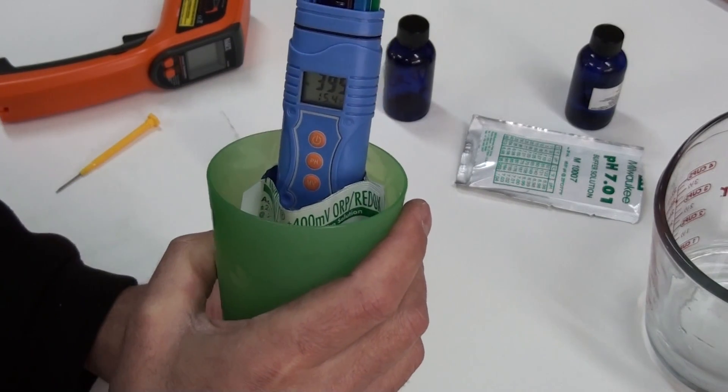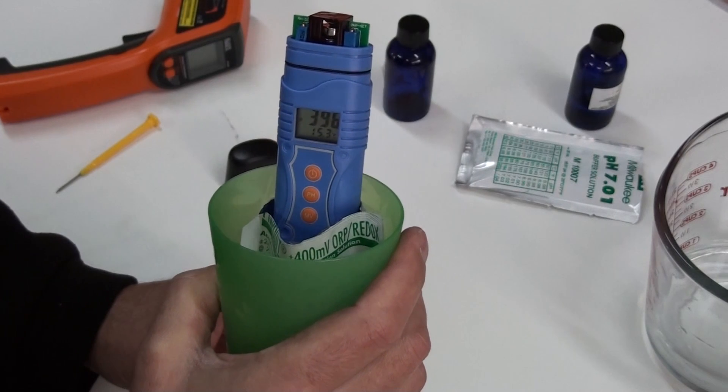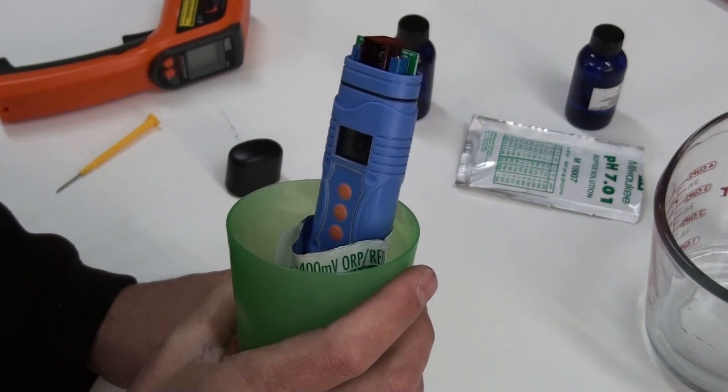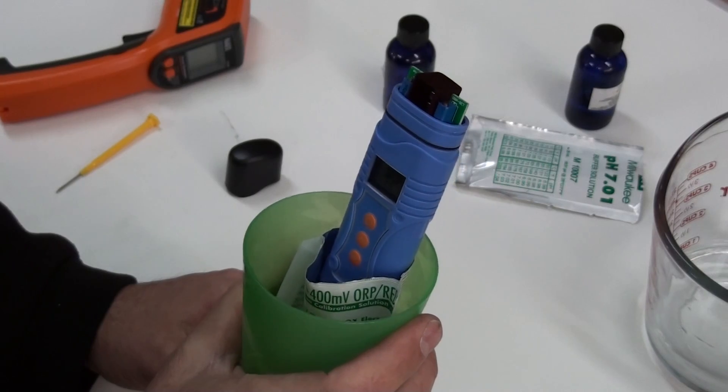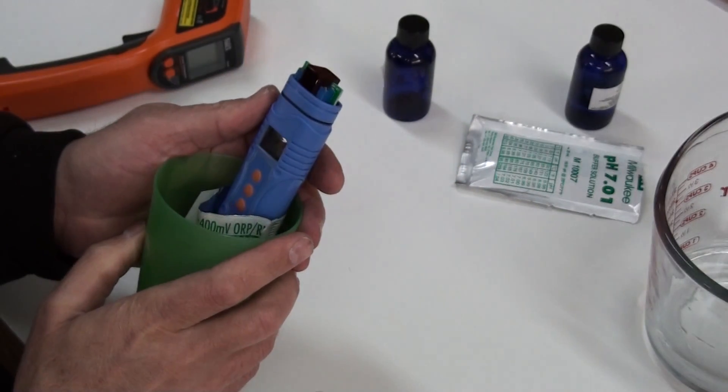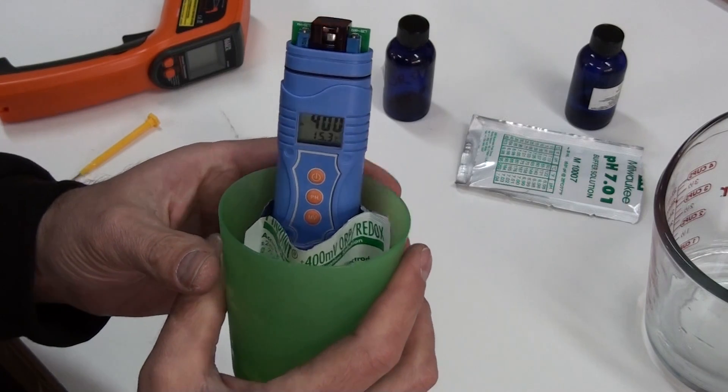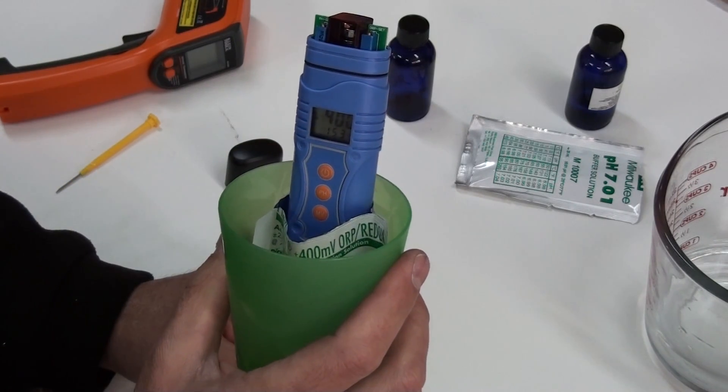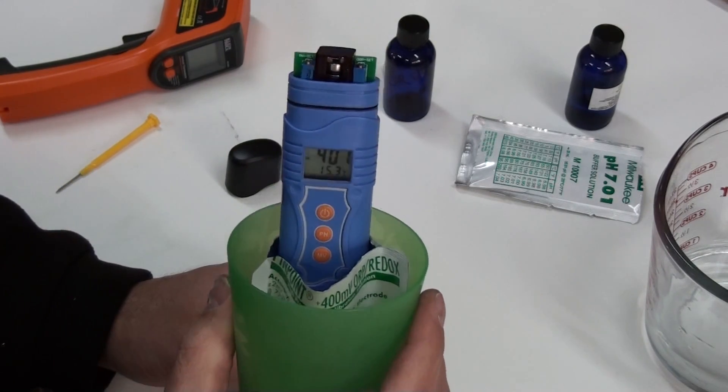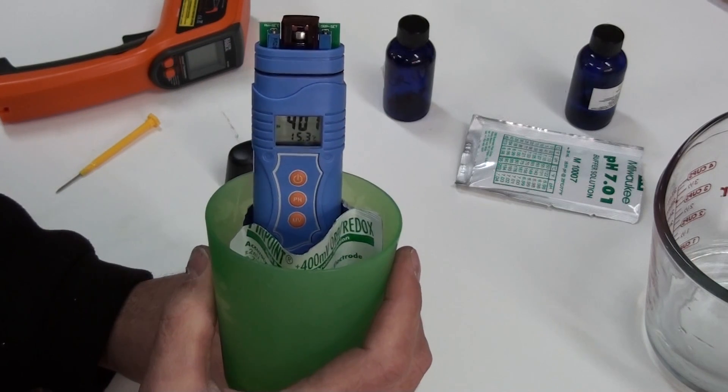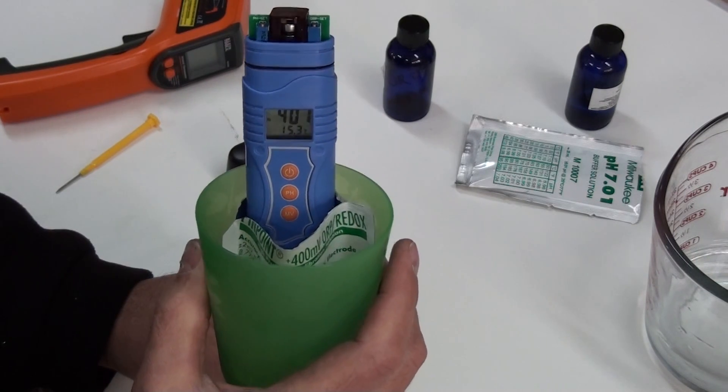We've got 4 negative. Oh, I'm sorry. It's positive 400 millivolt. So we're at positive 400 right now. We'll let it settle down.